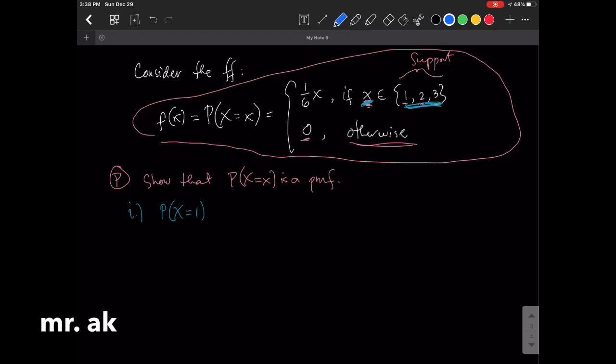The probability that x equals 1, we plug in here—plug in 1, because x took the value of 1, we substitute 1 for x. So that's (1/6) times 1, which is 1/6. So the probability that x equals 1 is 1/6, and that's greater than 0.